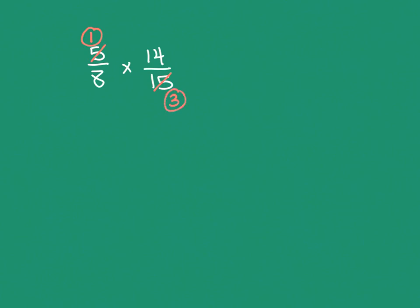One of my students found it helpful to circle those numbers on the outside, and it did seem to clear it up for a couple of other students too, so now I circle them. We circle the number it divided down to. Now let's check the other cross: is there something that goes into both eight and fourteen evenly? They're both even, so two must go into them. Two divides into eight four times and into fourteen seven times. Nothing goes into both four and seven, so that's as reduced as it gets. Now multiply straight across: one times seven is seven, four times three is twelve.